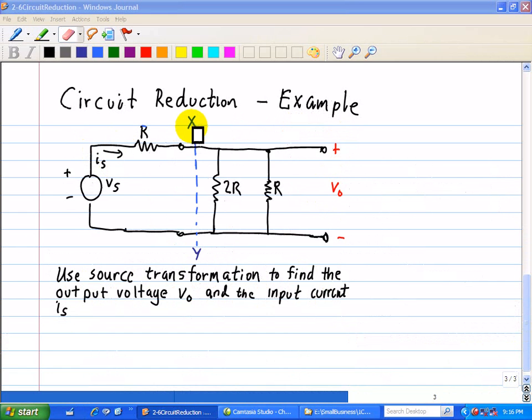And we notice we labeled X and Y terminals shown here, so we can convert this ideal voltage source in series with this resistor R into a current source, since we want to find IS. However, first we note this 2R and R are connected in parallel, these two resistor combinations.